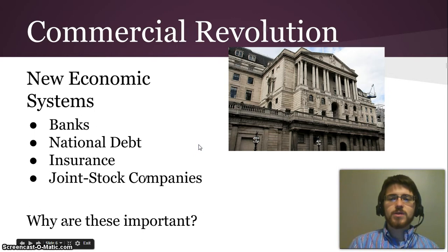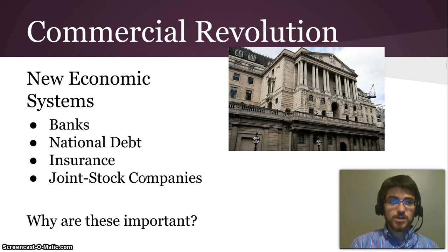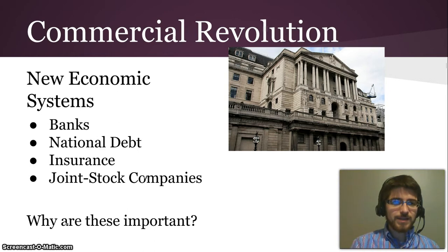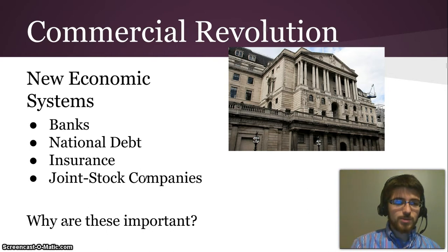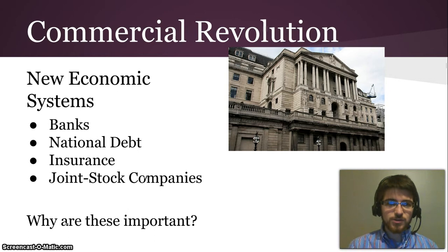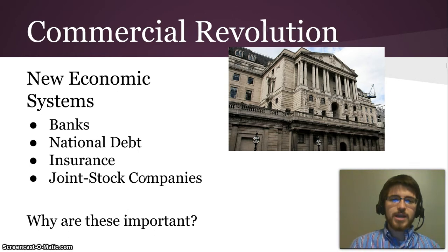The commercial revolution was a big part of the changes that pushed this commerce age forward. It involved a bunch of new economic systems like banks, national debts, insurance, and joint stock companies. Banks are the reason people were able to get enough money in loans to start up large companies and take long-distance trips to ship enormous numbers of goods. National debt lets countries work through really challenging military situations so that you can actually finance wars.